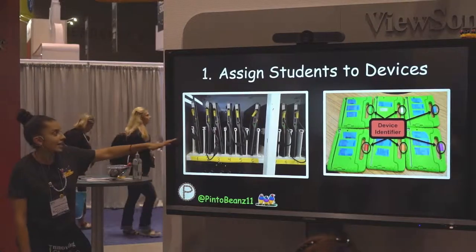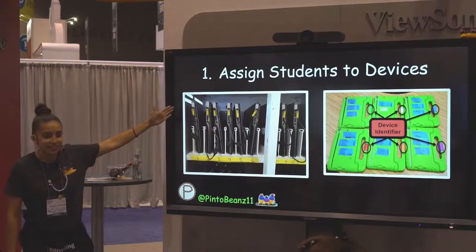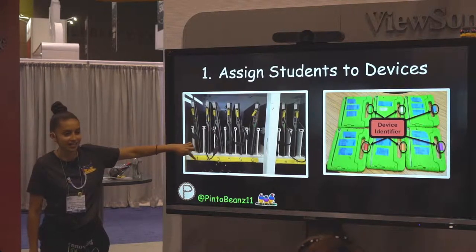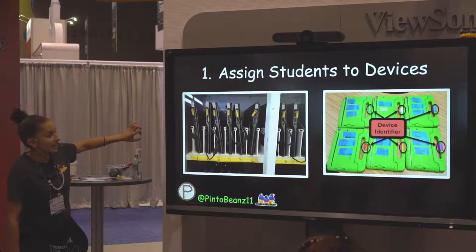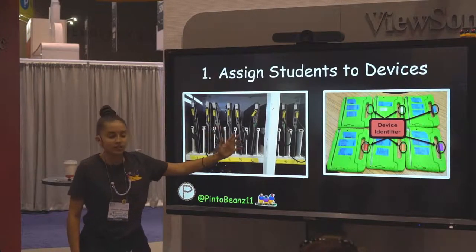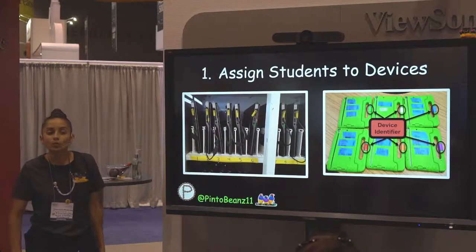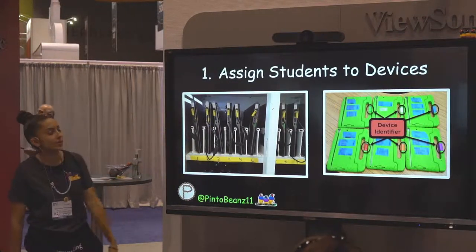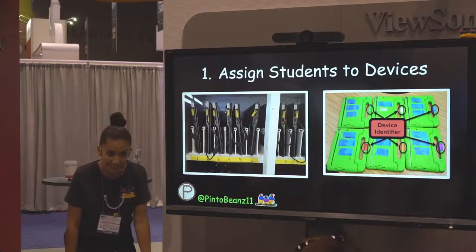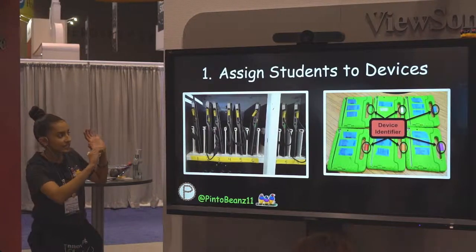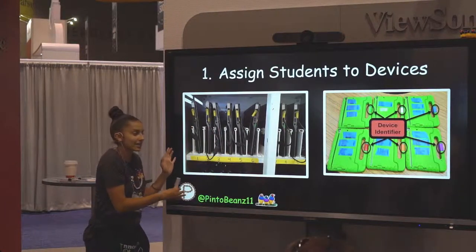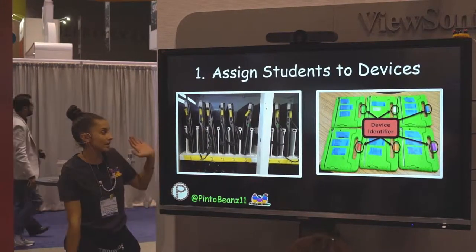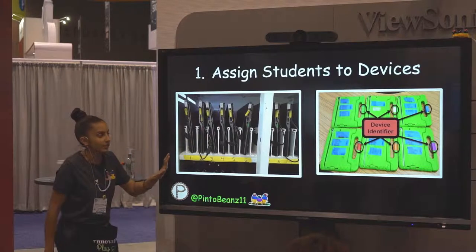I am type A and like to label everything: the device, the cord, and the slot. It's so worth it because the kids know which device to grab and which cord to plug it in, so it doesn't take an eternity to put their stuff away. There's a system to the madness. The number on each Chromebook goes along with their class number — that's how I label them.